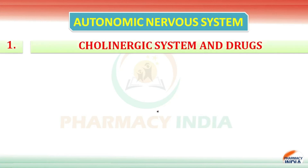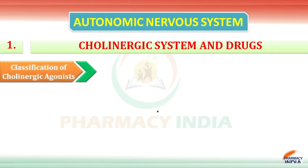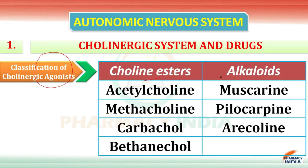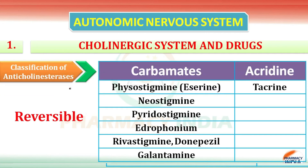The first one is the classification of cholinergic agonists. It is divided into two categories: cholinesters and alkaloids. In cholinesters there are four drugs — acetylcholine, methacholine, carbachol, and bethanacol. In alkaloids there are muscarine, pilocarpine, and arecoline.